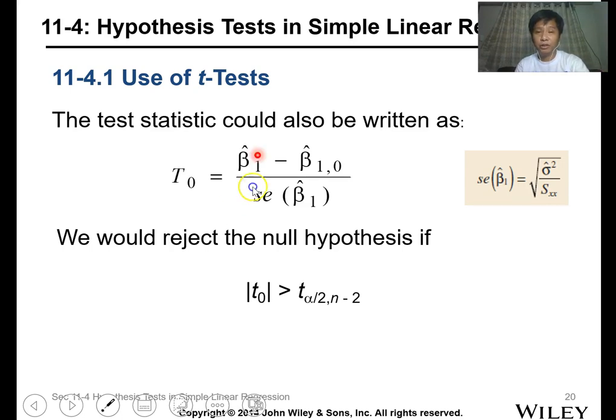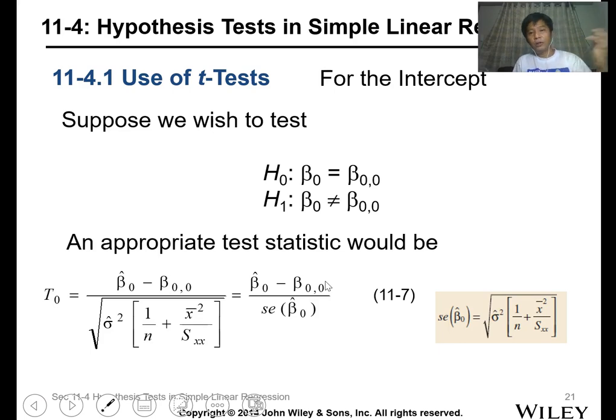The statistical test could be further simplified by substituting the denominator, the SE of beta 1. The rejection is when your absolute t value is greater than your t alpha over 2, n minus 2. This is the degrees of freedom, where n is the number of observations.